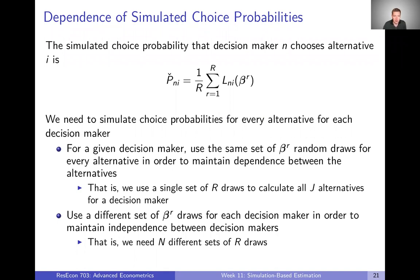There are a couple of issues to think about. The first is how to think about dependence in our simulated choice probabilities. We already talked through in the first video that these simulated choice probabilities are defined by taking capital R draws from beta, calculating the conditional logit choice probability for each one, and then taking the average over all of those. That gives us our simulated choice probability for decision-maker N and alternative I.